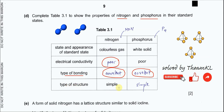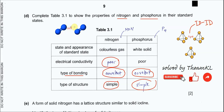For type of structure: nitrogen is a simple molecular structure. Phosphorus is also simple molecular — it does not form networks. Each phosphorus molecule consists of four phosphorus atoms. Between phosphorus molecules, there are induced dipole–induced dipole (ID–ID) forces. Nitrogen also has ID–ID forces between its molecules.